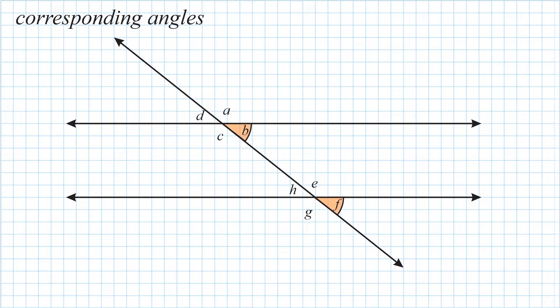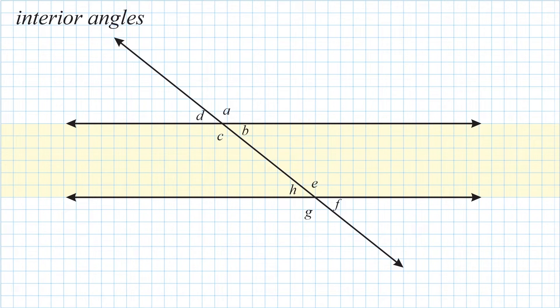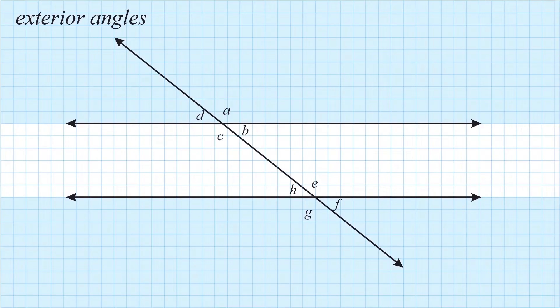Next we're going to look at the different regions created by a transversal crossing a set of parallel lines. The region shaded in yellow is called the interior region because it is located in the middle of our parallel lines. Angles C, B, H, and E are all considered interior angles. Everything in the blue shaded regions is considered exterior — angles A, D, G, and F. Interior and exterior always refer to position relative to the parallel lines.